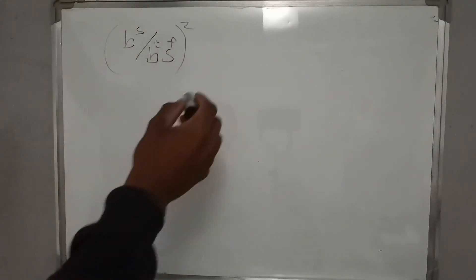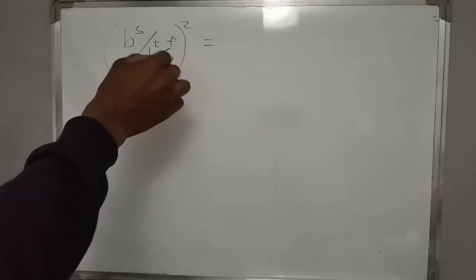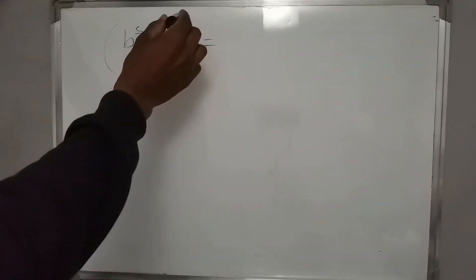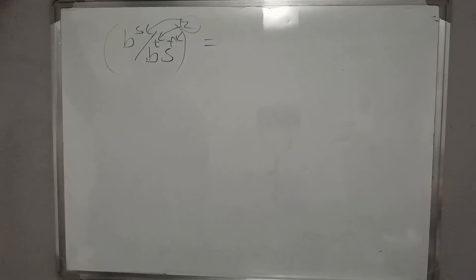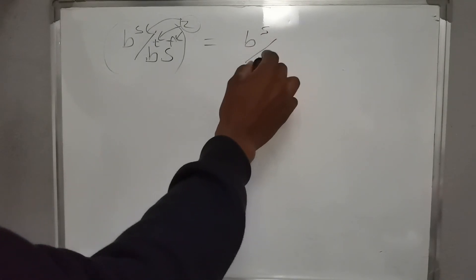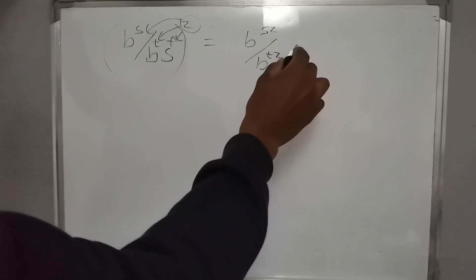Now a challenge: what happens when an exponent is positive and it goes up — it changes sign and becomes negative. What happens to s raised to f? It will change its sign and become negative. But remember, the exponent outside the parentheses multiplies each exponent inside. So we get bs divided by tz, and s to the f times z.